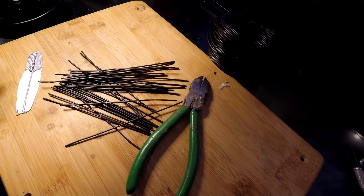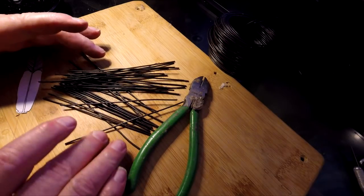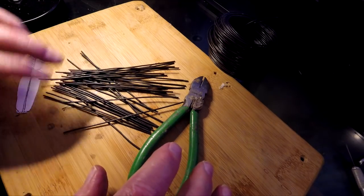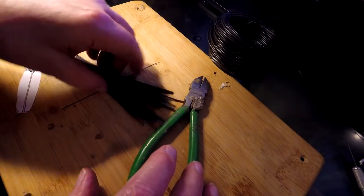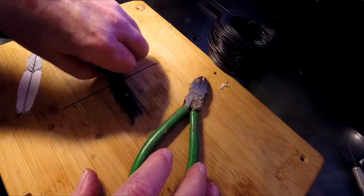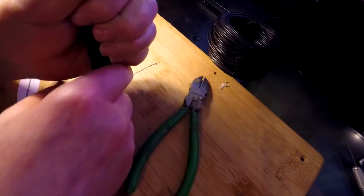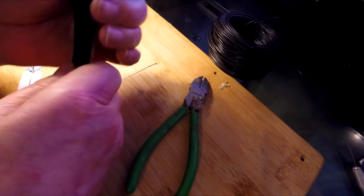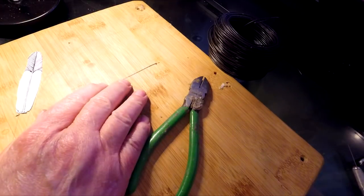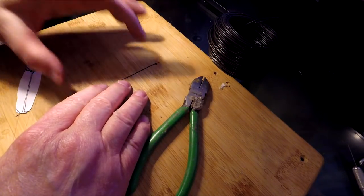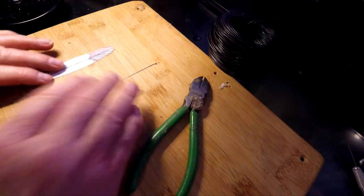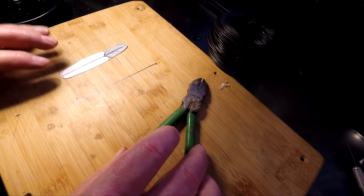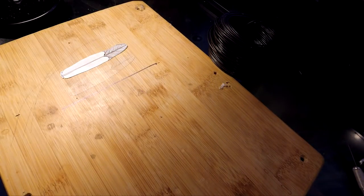Well, I've got the 32, actually 33 pieces of armature wire for my feathers. Now the next thing to do is to create the clay blanks that will be the feathers. And I'm going to go get the clay right now and do that.